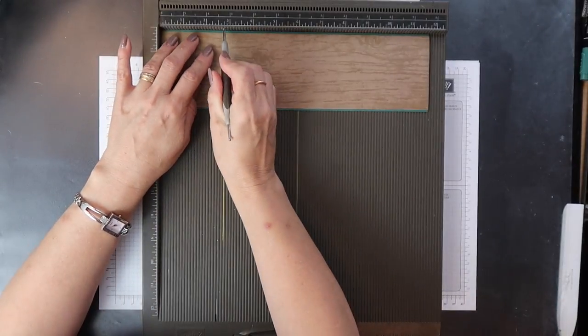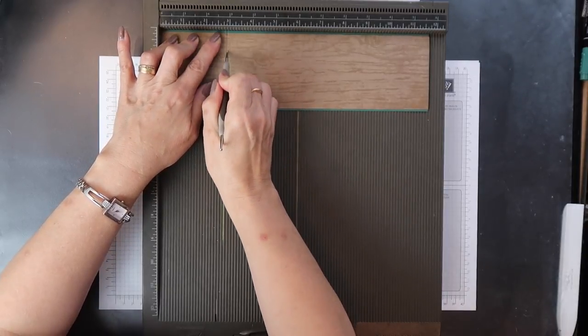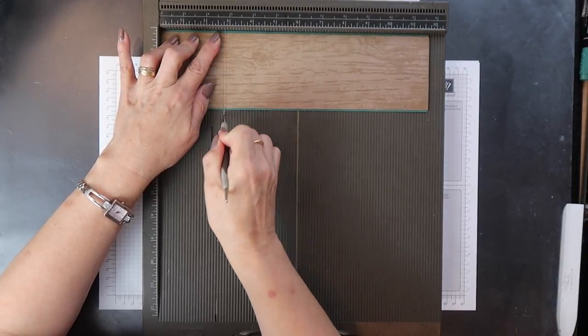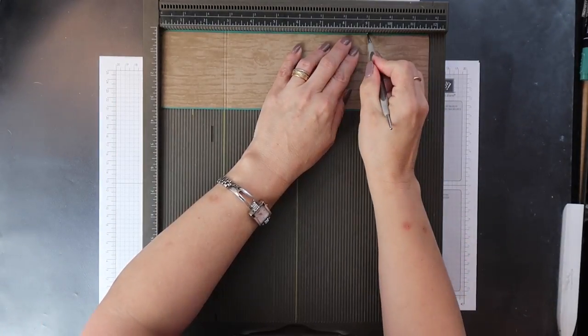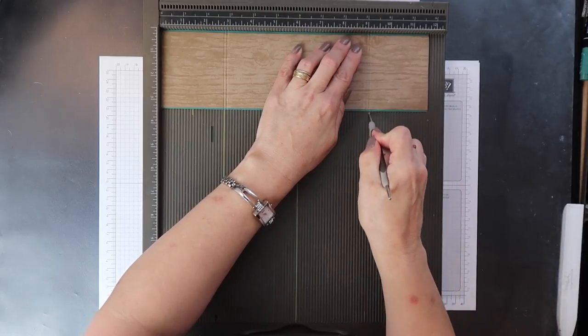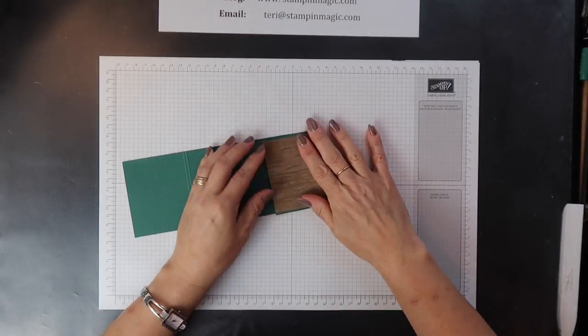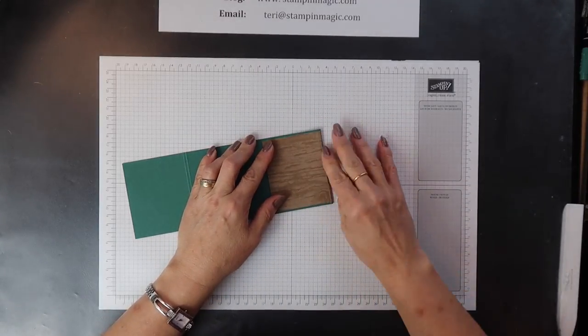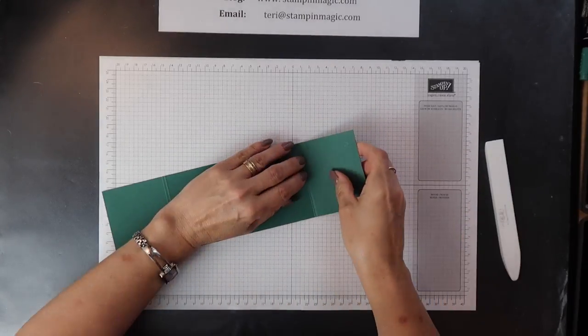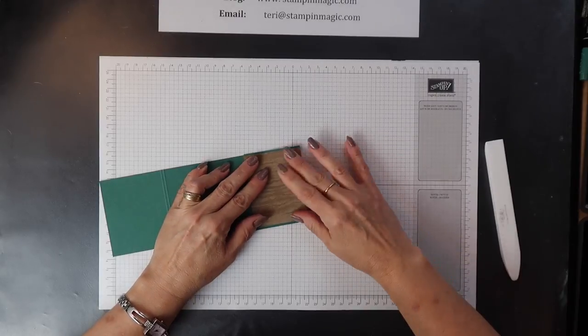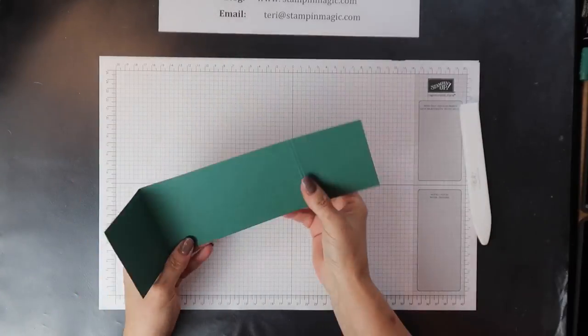Now this needs to be scored at 2.75 and 2.75 and 2.75 of an inch, and also 9 inches and 9.18 of an inch. Then you want to fold on each of those four score lines. This is a little tricky because they are so close together each pair, but just take your time, make sure they are straight, and reinforce them with your bone folder.